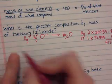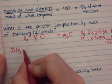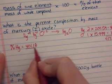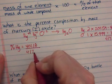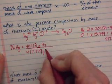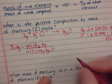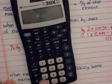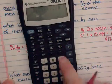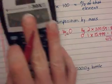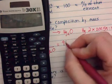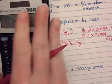To get the percent composition mercury, I would take the mass of just the mercury, 401.18, divide it by the mass of the entire compound, 417.179. This was the grams of mercury, this is the grams of the entire compound. I divide those. So 401.18 divided by 417.179. I get that number that's less than 1, it says 0.96. Multiply it by 100, and we find out that it is 96% mercury by mass.